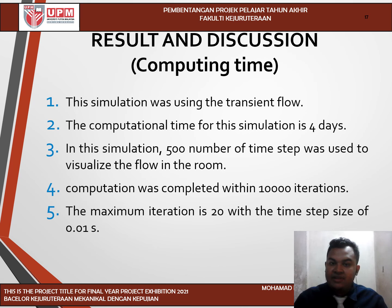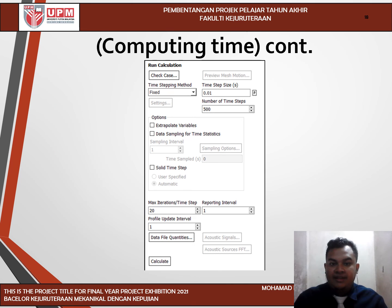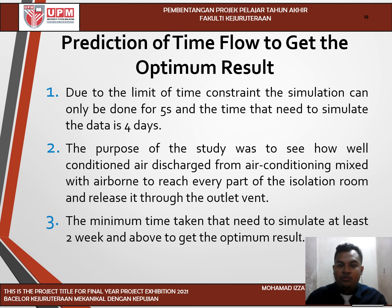This is the computational time result. This simulation used a transient flow approach and took 4 days to complete, using 500 time steps with a time step size of 0.01 seconds and a maximum of 20 iterations per step, for a total of 10,000 iterations. Due to time constraints, the simulation could only be run for 5 seconds. To get the optimum result, the minimum time needed to simulate would be at least 2 weeks and above.